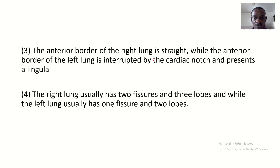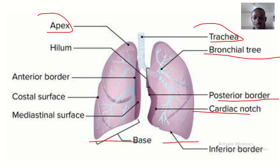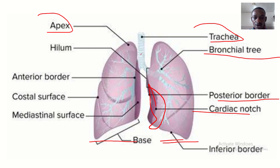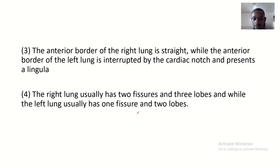The anterior border of the right lung is straight, while the anterior border of the left lung is interrupted by a cardiac notch and presents as a lingula. You can see that the left lung has a cardiac notch — like an invagination — while the right lung's anterior border is just straight.